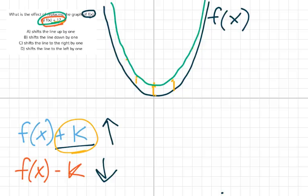It's the same graph, but we just took it and we shifted it all up 1. So that is what happens when we shift f(x) by 1. And the answer choice then is that it will shift the line up by 1, not down by 1, not to the right, and not to the left.